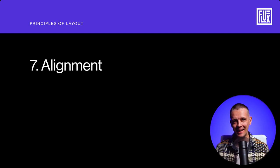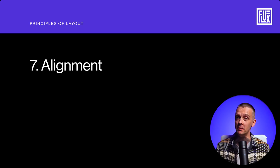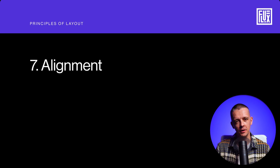Number seven is alignment — and you'll see all these come together at the end. Alignment is arranging items on vertical and horizontal axes. With body copy, we generally want to align that to the left. That should be your default. It looks the best most of the time, you only have the rag on one side, and it's the most legible — the easiest for people to read.